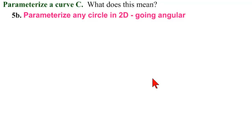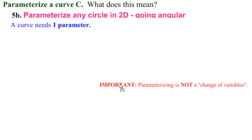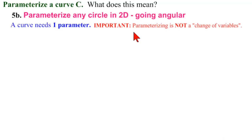In the next one, we're going to parameterize any ellipse. But first, as always, let us be boring and remember that a curve needs one parameter. And it's important to distinguish between parameterization and a change of variables. Change of variables is what we do when we're integrating. This is parametrizing. It's done at the beginning.